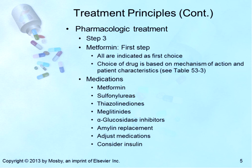The DPP-4 inhibitors inhibit the enzyme that breaks down endogenous GLP-1, thus prolonging its activity. Sitagliptin (Januvia) is the first in this class, given orally once daily. As monotherapy, it reduces hemoglobin A1C by 0.6 to 1.5% in patients with baseline hemoglobin A1C less than 8%. When given in combination with metformin, hemoglobin A1C was reduced by 0.6%. Headache and diarrhea were the only significant side effects.